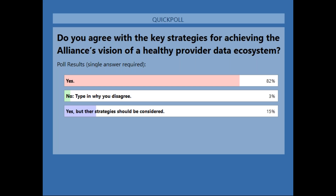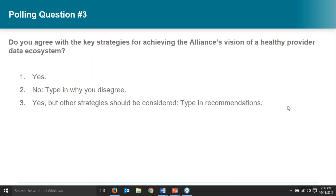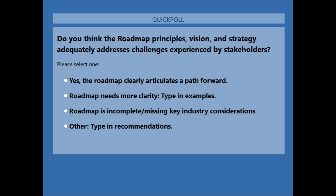I have one more polling question before we open the line for discussion. This question asks: do you think the roadmap principles, vision, and strategy adequately address provider data challenges experienced by stakeholders? The answers are: yes, the roadmap clearly articulates the path forward; number two, the roadmap needs more clarity; number three, the roadmap is incomplete or missing key industry considerations; or number four, there are other considerations that need to be accounted for.